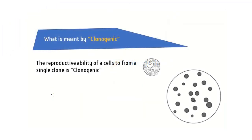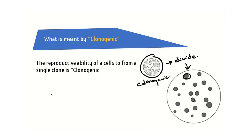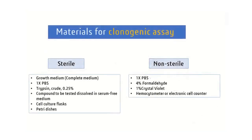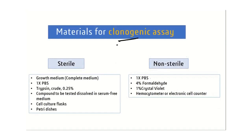The clonogenic survival assay determines the ability of a single cell to divide indefinitely. For example, a single cell divides to form a single colony, and that cell is said to be clonogenic. The number of colonies are measured by colony forming unit, also known as CFU.